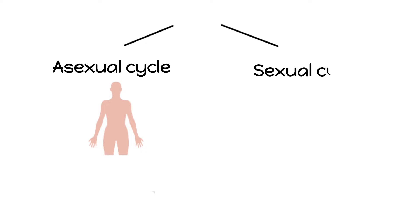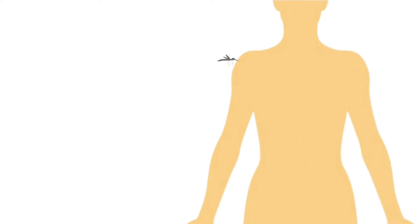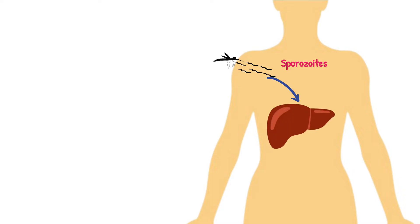The parasite runs two cycles: an asexual cycle in humans and a sexual cycle in mosquitoes. It begins with the bite of a female Anopheles mosquito. The saliva of this infected mosquito contains sporozoites, which are the parasite. When the infected mosquito bites a human, the sporozoites are transferred into the bloodstream from the saliva of the mosquito. These sporozoites rapidly reach the liver parenchymal cells and develop primary schizonts within 8 to 21 days.